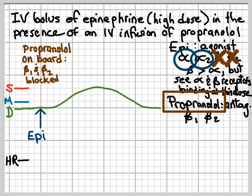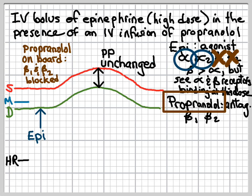The direction of the response is going to be the same, so don't worry about minor variations in magnitude due to alpha-2 effects — just focus on the overall direction. Since the beta receptors are blocked, there's no effect of beta stimulation by epinephrine on cardiac output. So systolic pressure increases in parallel to the diastolic pressure, and there is no increase in pulse pressure because there is no beta-1 effect.